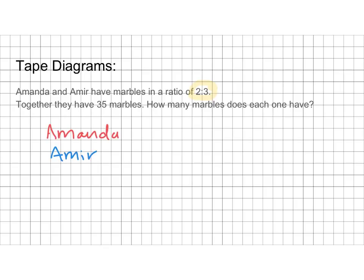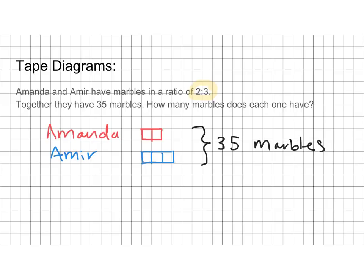We're going to start by drawing a rectangle for how much Amanda has, using one box for each part of her ratio. So Amanda gets two boxes and Amir gets three boxes, lined up at the same starting point with each box representing one unit of their ratio. Amanda has two for every three that Amir has. Together they have 35 marbles. There are five total parts, so we do 35 divided by 5, which tells us each part is worth 7 marbles.